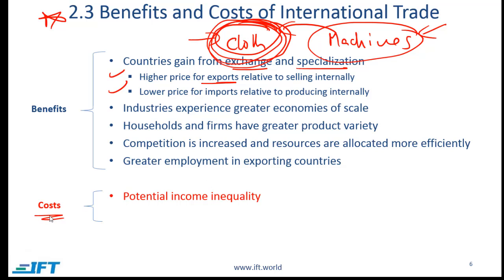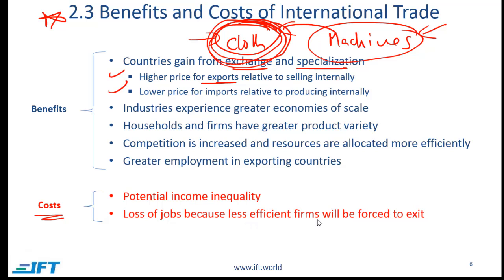What are some of the costs? There is the potential for income inequality both within a country and across countries. People in successful export industries tend to earn higher incomes, and countries with more efficient export industries see income grow faster than others. There will also be a loss of some jobs as less efficient firms are forced to exit — for example, the machine-producing industry in a cloth-specializing country will shrink.